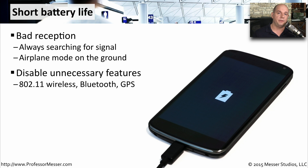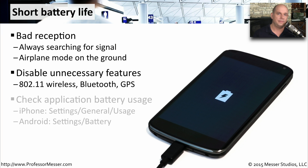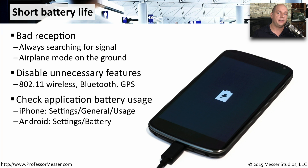There might also be features of your phone you can disable completely to save battery. If you're not using 802.11 wireless, Bluetooth, or GPS, you can disable each individual feature to save battery life. Most mobile devices let you see which applications are using the most battery. In iOS, look under Settings, General, and Usage. In Android, look under Settings and the Battery option.